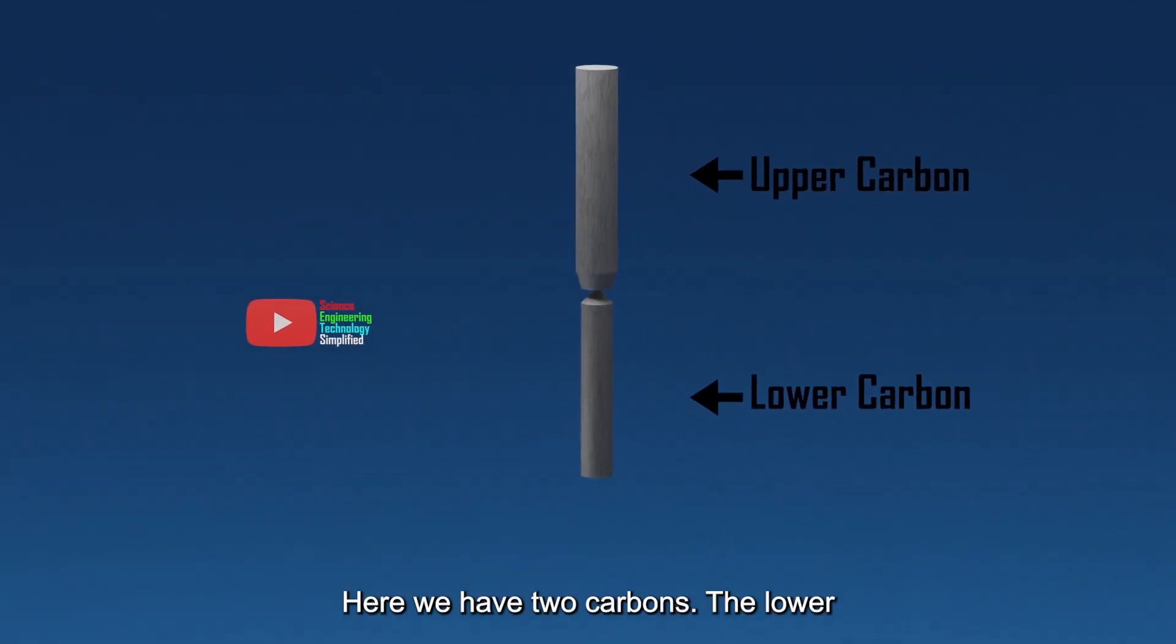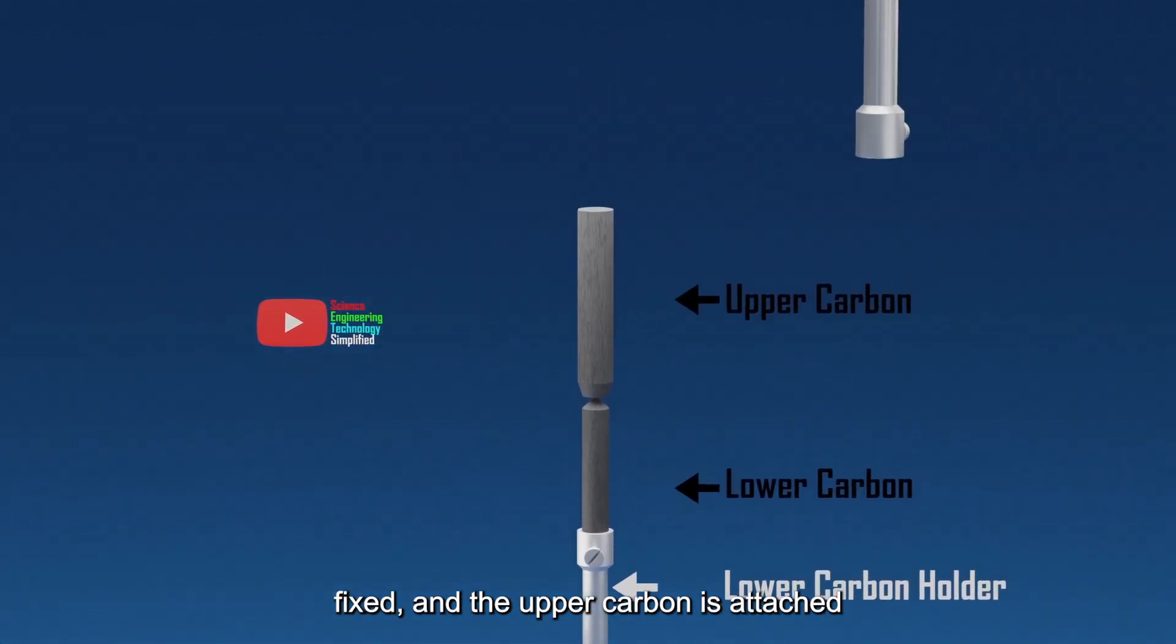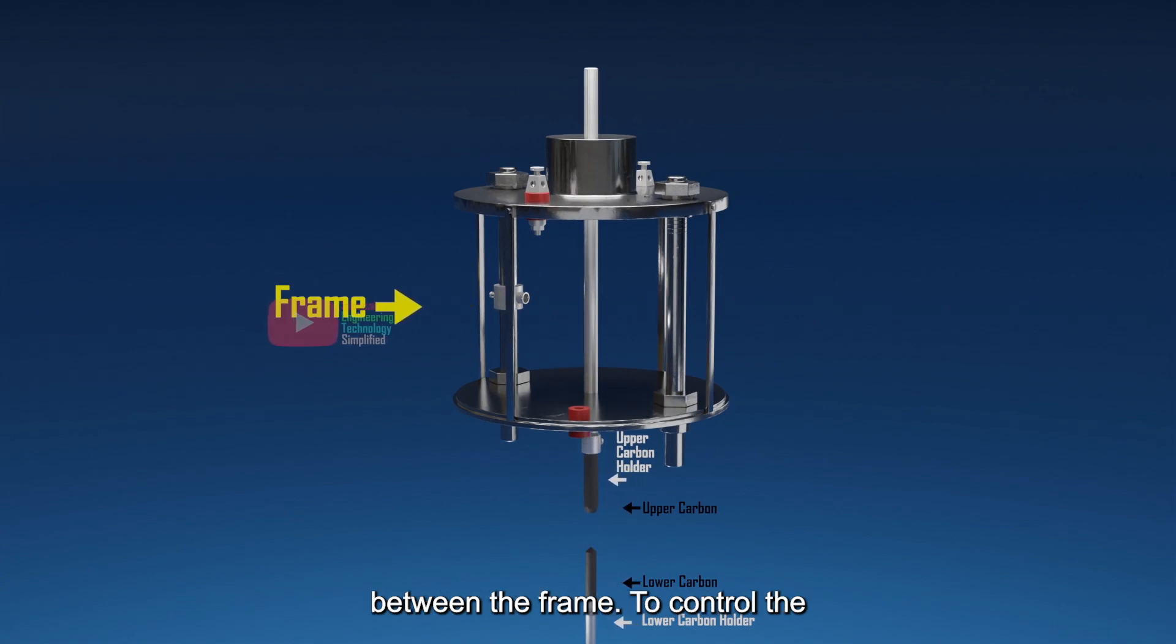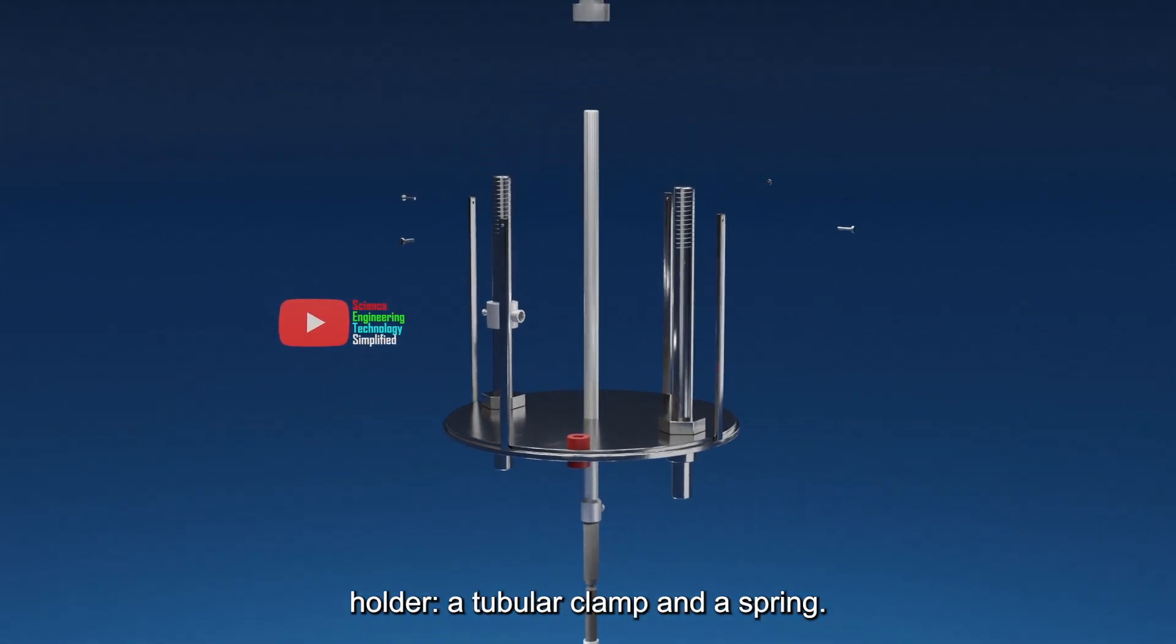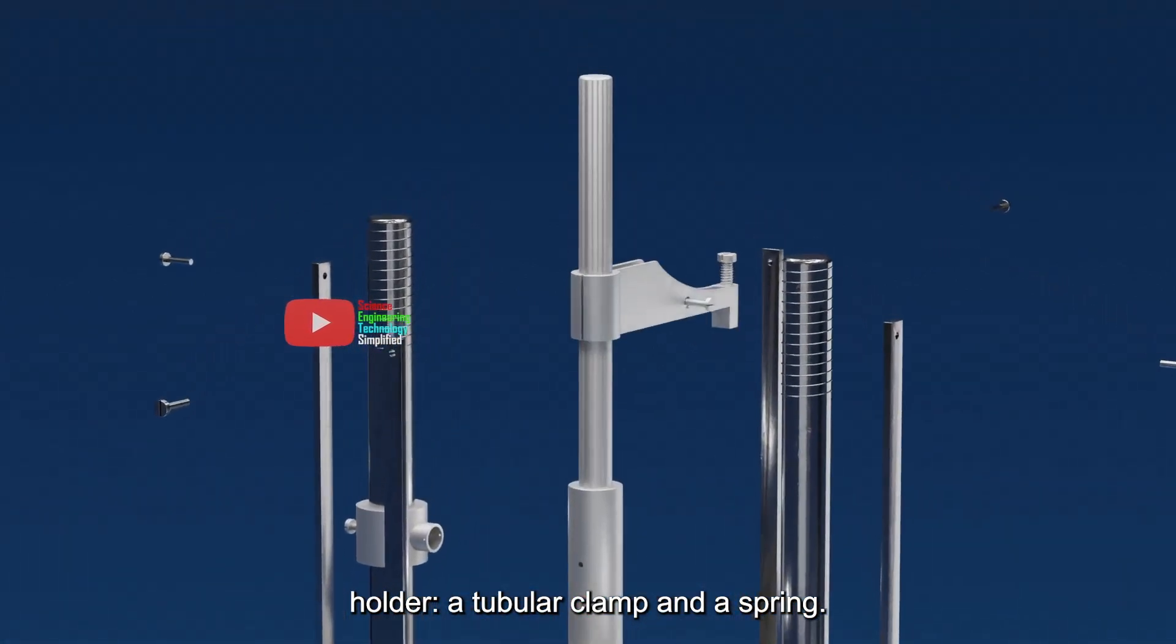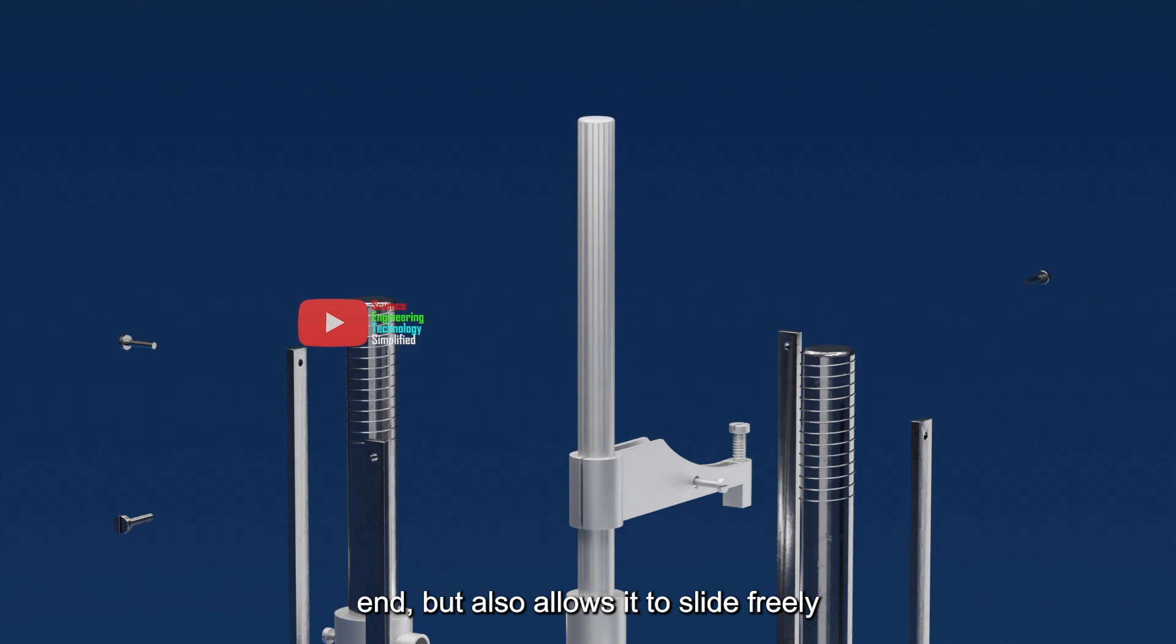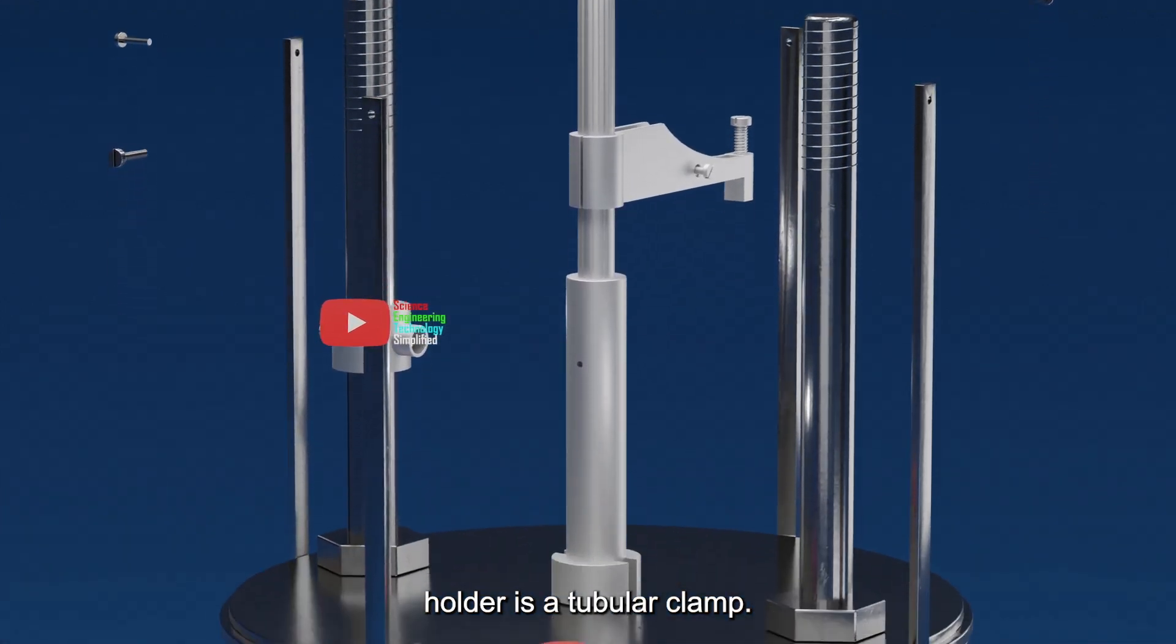Here we have two carbons. The lower carbon is attached to a holder which is fixed, and the upper carbon is attached to a holder which is free to slide between the frame. To control the sliding, two things are attached to the holder, a tubular clamp, and a spring. This spring holds the rod at its upper end, but also allows it to slide freely through the same. The pressure of this spring is adjusted by a screw.